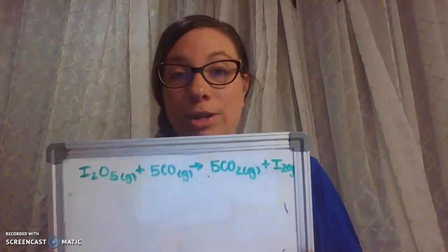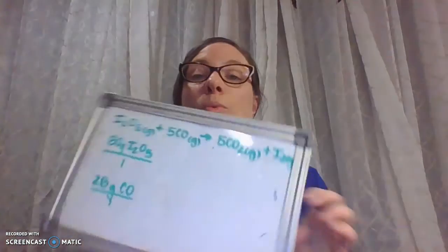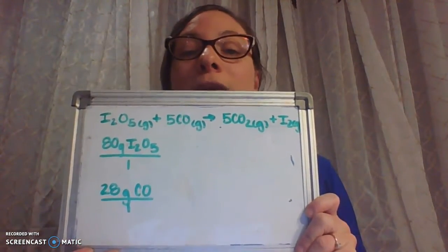Now that we know where we're going, let's take a look at what we need to know to solve this problem. The first step in all of these problems is to balance the equation, and this equation is already balanced, so step one is done. We know we have 80 grams of iodine oxide and 28 grams of carbon monoxide. We're going to use both of those values to find the mass of iodine that could possibly be produced. We need to figure out which of these two given values gives us less product — that reactant is the limiting reactant, and it controls how much product can be formed.